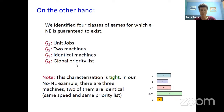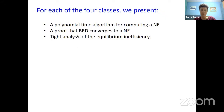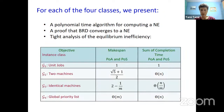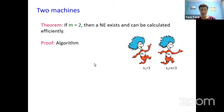For each of the four classes, we present a polynomial time algorithm for computing a Nash equilibrium. Not only does Nash equilibrium exist, it can be computed efficiently. We proved that best response dynamics converges to a Nash equilibrium, and we analyzed the equilibrium inefficiency. These are the results: for all classes, the price of anarchy and price of stability are the same. Now let's delve into the details of the analysis for two machines.